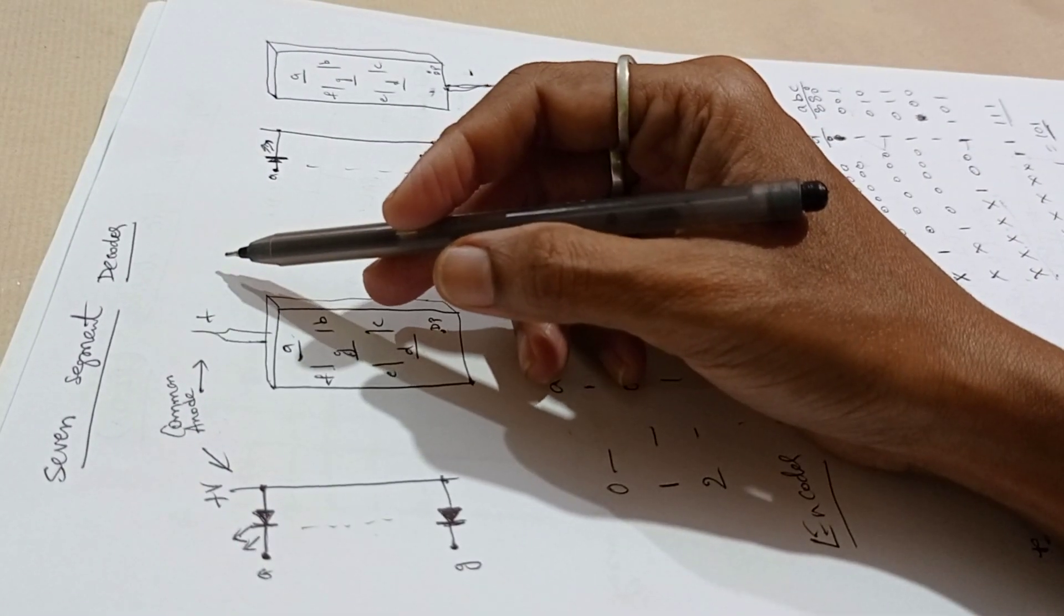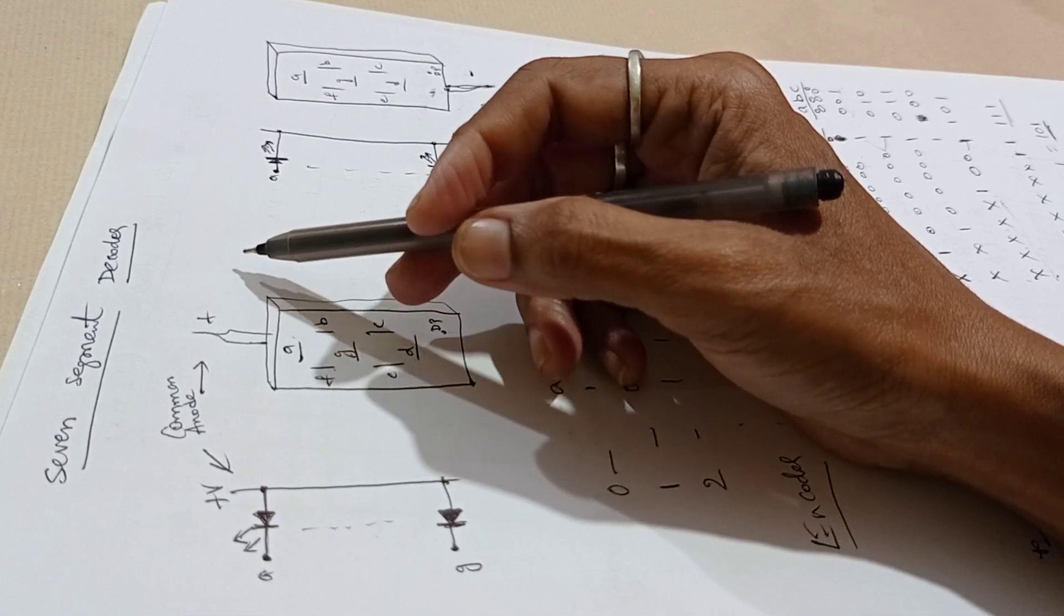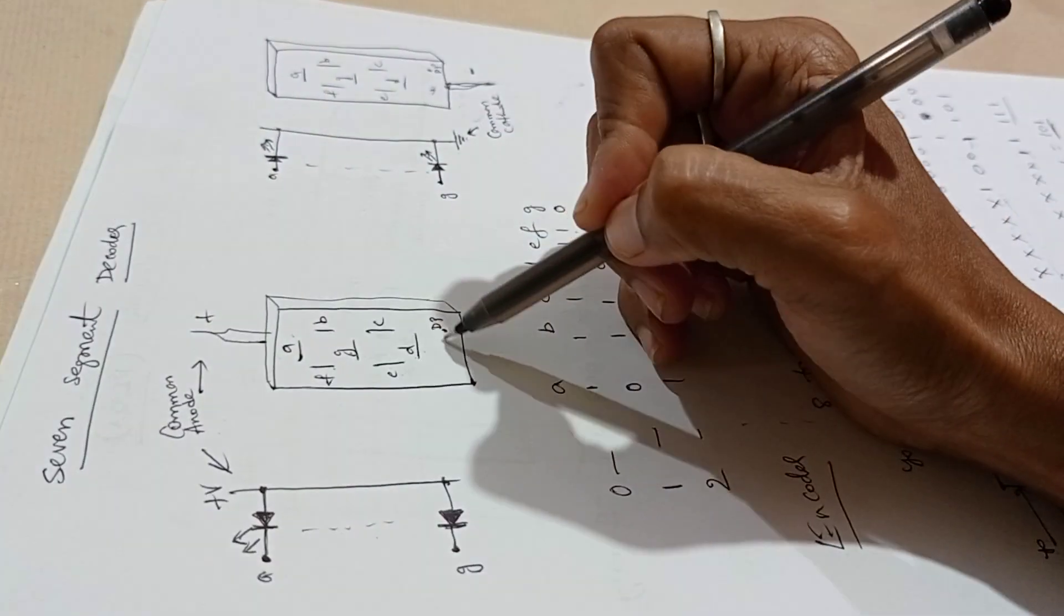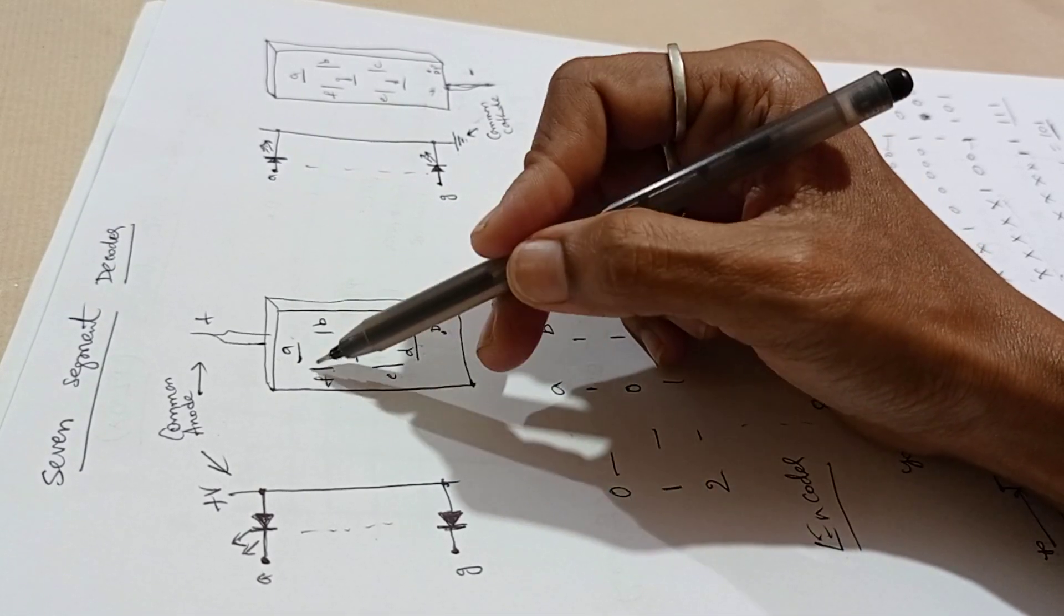7-segment decoder, also known as 7-segment indicator, consists of 7 LEDs labeled A through G.